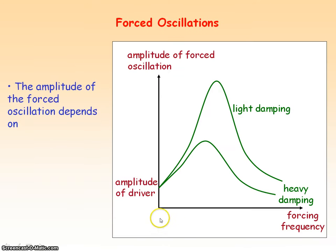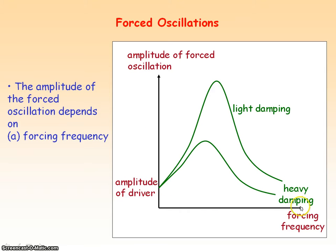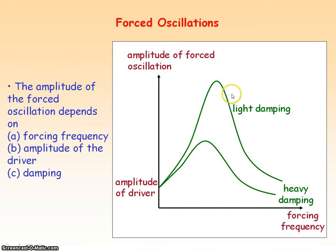This graph shows that if we change the forcing frequency of the externally applied force, the amplitude of the forced oscillation changes. The amplitude depends on three things: the forcing frequency, the amplitude of the driver (the externally applied force), and how much damping there is — whether there is light damping or heavy damping.